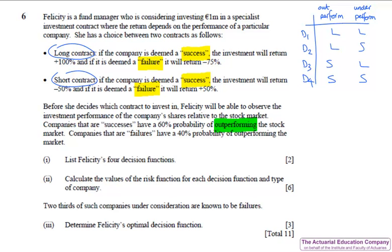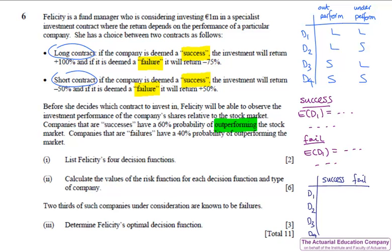We get our four decision functions and then for each of them we need to calculate what's called the risk function. To do that let's assume nature is a success and then we calculate the expected value for each decision function if nature's a success and then we repeat that for if nature's a fail. These values form our table of results of the decision functions against the two states of nature. We can then do part three where we're told the probabilities of the two states of nature and we're asked to calculate the optimal decision function and so we can do that using Bayes criterion. If you couldn't do part two at least make up some numbers so you can show the examiner you know how to use Bayes criterion.